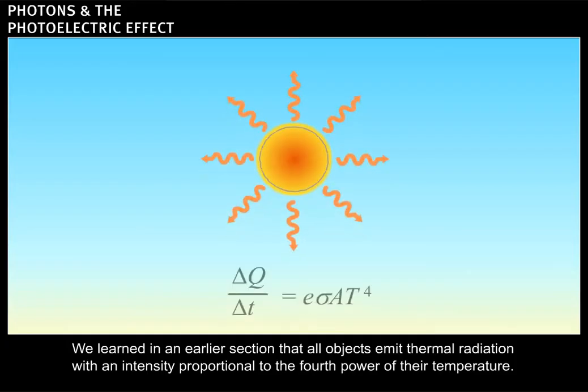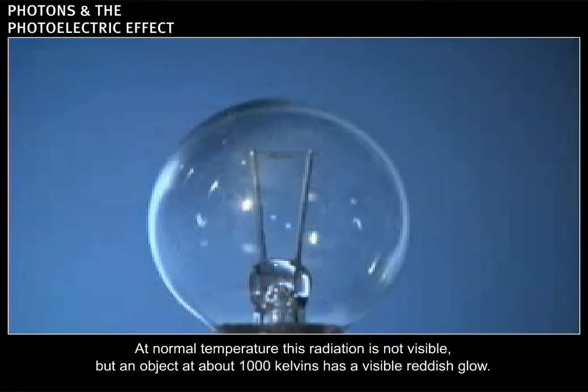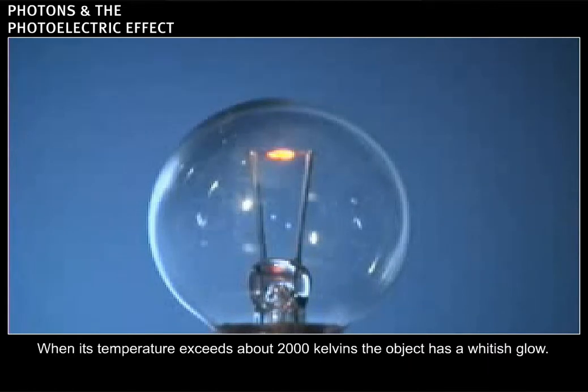We learned in an earlier section that all objects emit thermal radiation with an intensity proportional to the fourth power of their temperature. At normal temperature, this radiation is not visible. But an object of about 1,000 kelvins has a visible reddish glow. When its temperature exceeds about 2,000 kelvins, the object has a whitish glow.